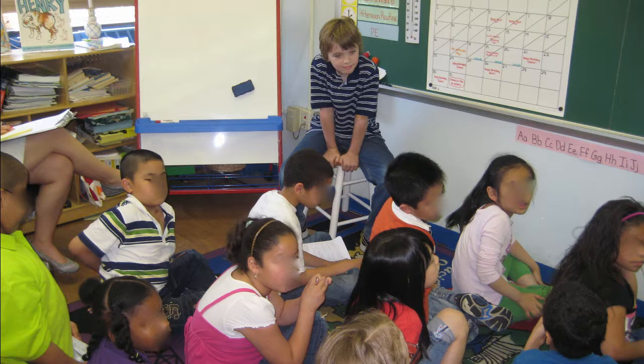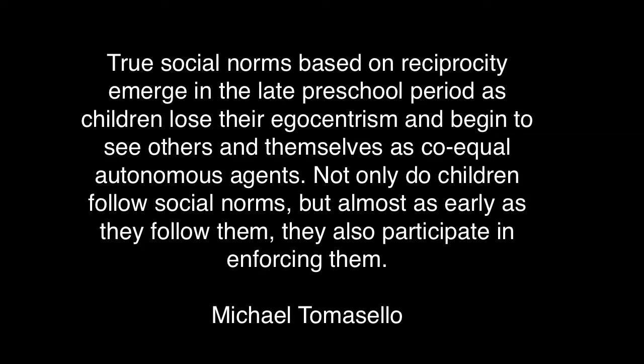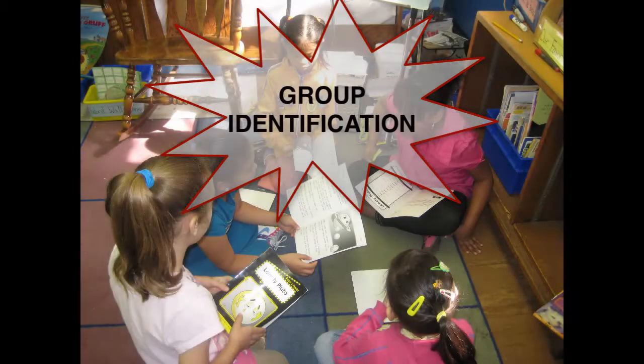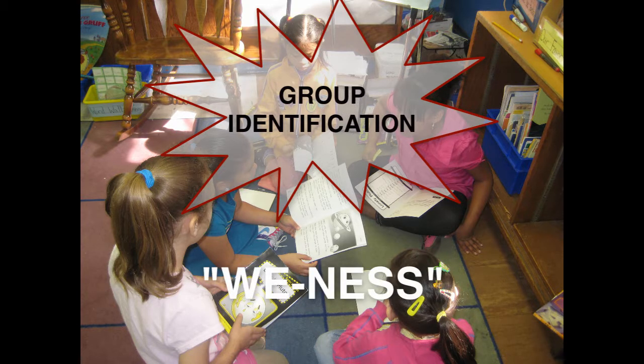Research has demonstrated that children are naturally inclined to enforce rules. Michael Tomasello explains: 'True social norms based on reciprocity emerge in the late preschool period as children lose their egocentrism and begin to see others and themselves as co-equal autonomous agents. Not only do children actively follow social norms, but from almost as early as they follow them, they also participate in enforcing them.' This inclination comes from the child's sense of personal identification with a group and their appreciation for being part of it — this sense of we-ness rooted in the social emotional capacities of being a human being.